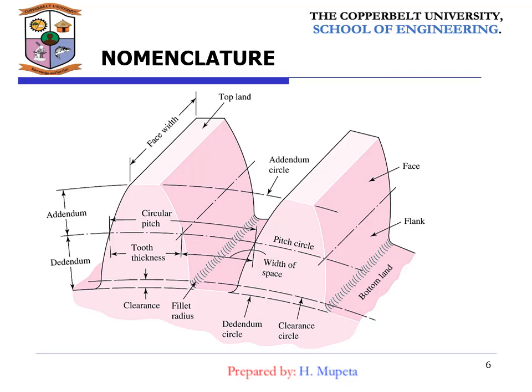We begin with the pitch circle, which is the reference circle upon which all calculations are usually based. Its diameter is the pitch diameter. The pinion is the smaller of the two mating gears; the larger is often called the gear. The circular pitch is the distance measured on the pitch circle from a point on one tooth to a corresponding point on an adjacent tooth. The module M is the ratio of the pitch diameter to the number of teeth.